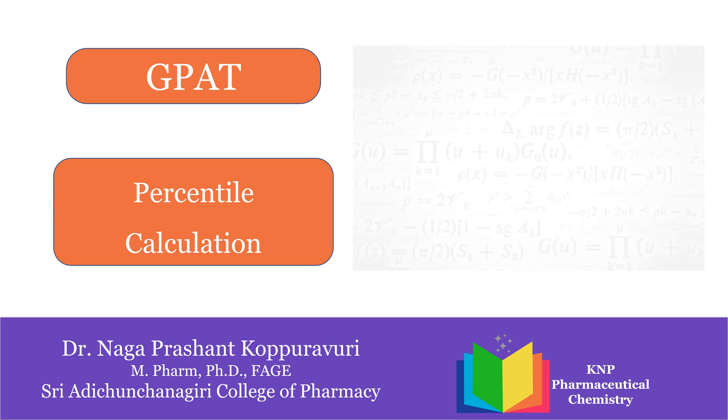There we can see three components: the rank which is also called as AIR, that is All India Rank, the second one is total marks scored, and the third one is percentile. These three metrics will be mentioned in your GPAT rank card.